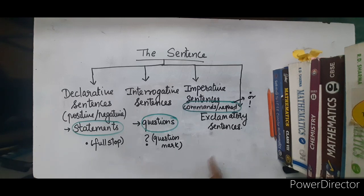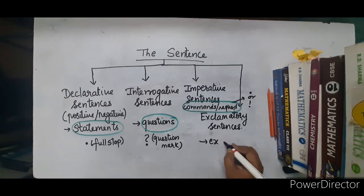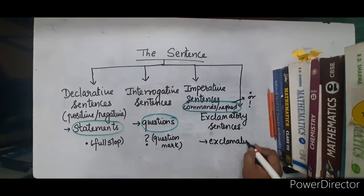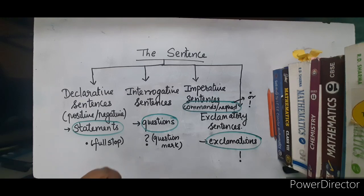The last type of sentence is exclamatory sentences. The simpler name for it would be exclamations. When we see exclamatory marks, we can term them as exclamatory sentences, and the end punctuation mark for them would obviously be an exclamation mark.